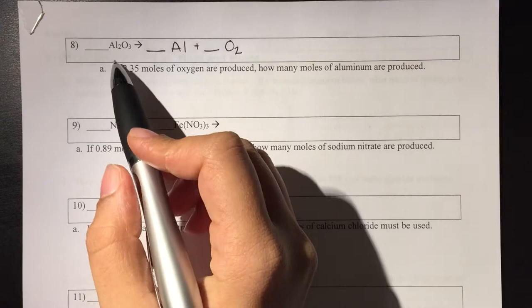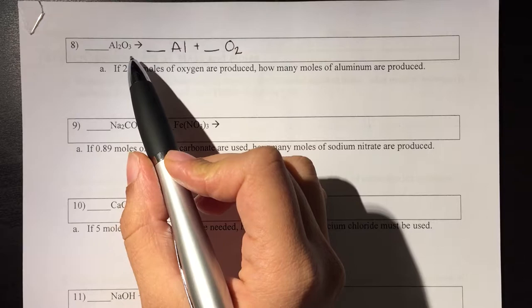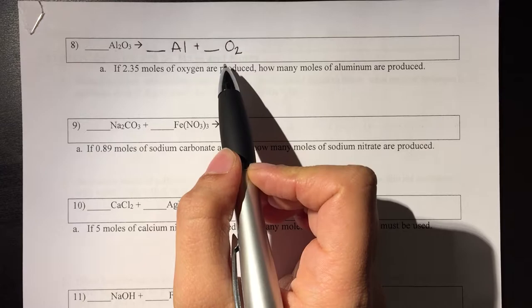Next we're going to go about balancing this. If we check, we can see we're not balanced because I have two aluminums here and only one here. I have three oxygens here and two here. Now the oxygens are going to be more difficult to balance because we have a three and a two, so our best bet is to get them both to six.